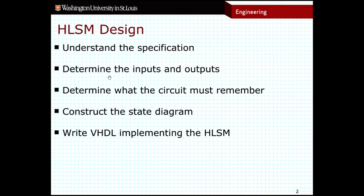Step three says determine what the circuit must remember. We need to consider both states and variables. In terms of states, a good design uses one state to represent that we have not hit our multiple yet and still need to keep counting, and another state to represent that we have hit the multiple, so we need to emit a pulse. So only two states will do it. We also need a variable to count how many clock cycles we've seen — we'll call that variable I, in the same sense that loop variables are called I in Java or C code, because this circuit very much resembles a loop.